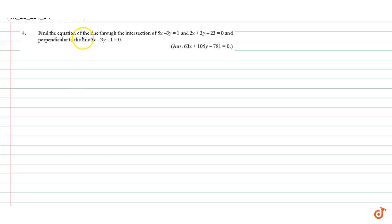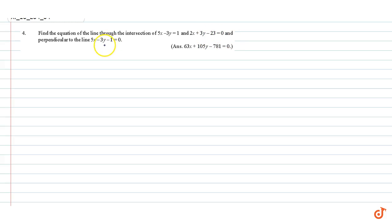In this question we have to find the equation of the line through the point of intersection of the lines 5x minus 3y equal to 1 and 2x plus 3y minus 23 equal to 0, and that is perpendicular to the line 5x minus 3y minus 1 equal to 0.